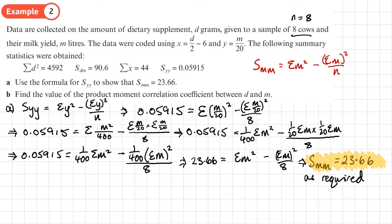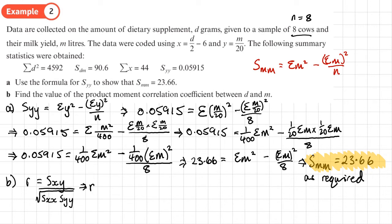Part B asks for the PMCC between D and M. The PMCC between D and M equals the PMCC between X and Y because the coding is linear, but we don't have enough information to compute it via X and Y directly. So we use the formula with D and M: R = SDM divided by the square root of SDD times SMM.